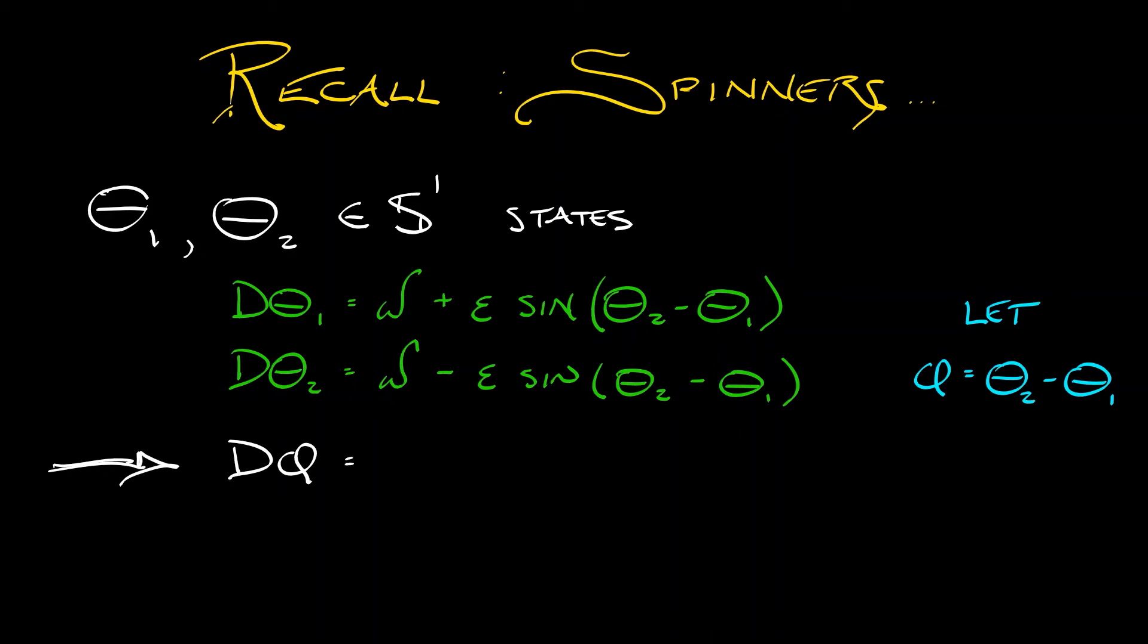The omegas cancel. We get minus 2 epsilon sine phi. And because this had a stable equilibrium at phi equals zero, these two spinners synchronized.